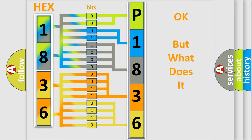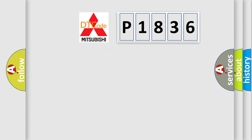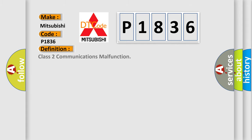The number itself does not make sense to us if we cannot assign information about what it actually expresses. So, what does the diagnostic trouble code P1836 interpret specifically for Mitsubishi car manufacturers? The basic definition is: Class 2 communications malfunction.